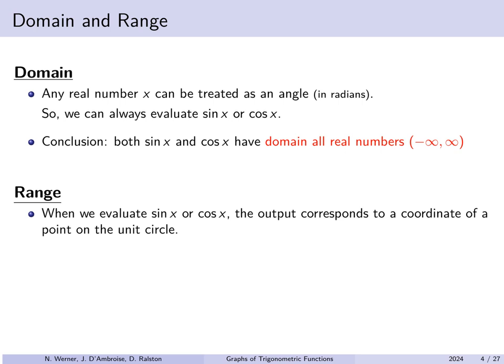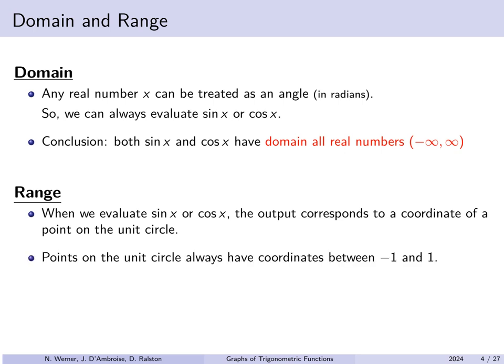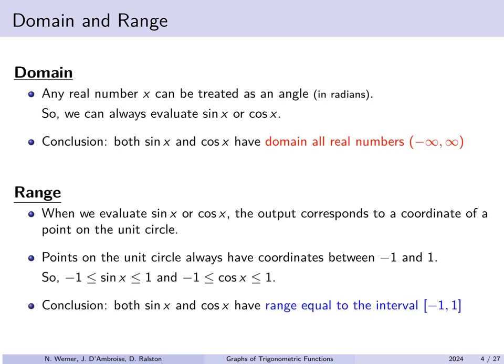What about the range? When you evaluate sine or cosine, the output corresponds to the horizontal or vertical coordinate of a point on the unit circle. Points on the unit circle have coordinates between plus or minus 1. Therefore, the sine and cosine functions are always between plus and minus 1. The range of both sine and cosine is the closed interval from -1 to 1, including both endpoints. As your angle rotates around, the corresponding point on the unit circle will have coordinates going all the way from -1 to +1.